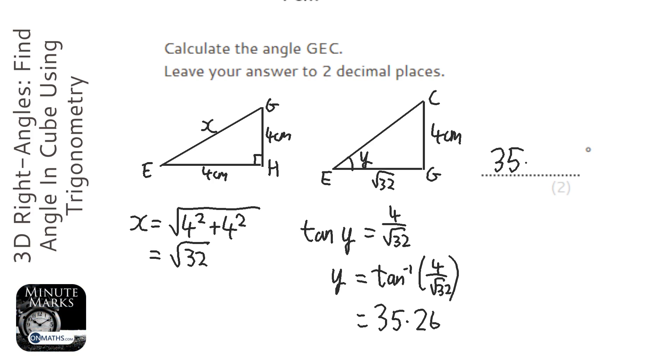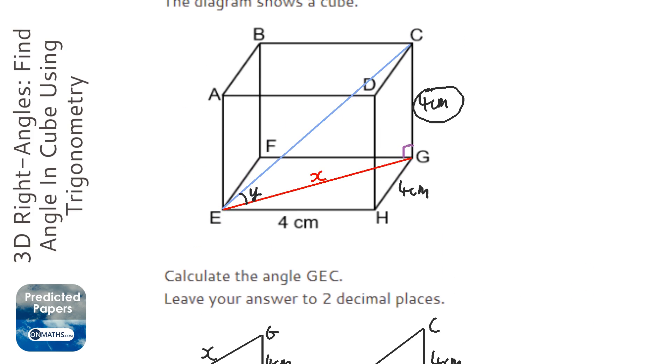Now 35.26 is actually quite a special number because it works for any cube. It's always going to be 35.26 no matter what the cube is. So if the lengths were different, it would still be 35.26, which I've given away a big secret to answering questions on the site.